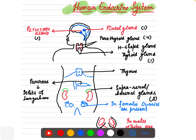Coming to the neck area, there is an H-shaped structure — the black portion — that is the thyroid gland. Embedded inside it are four red dots: those are the parathyroid glands, four in number. So in the neck we have the thyroid gland and inside it the parathyroid gland. In the chest cavity there is the thymus.